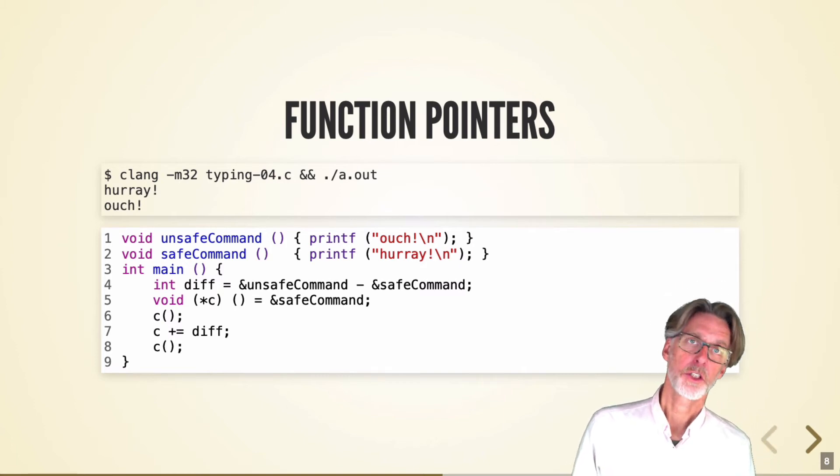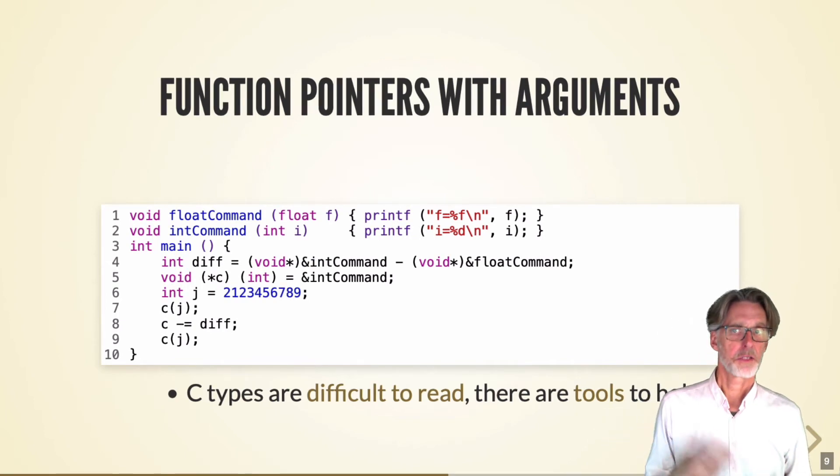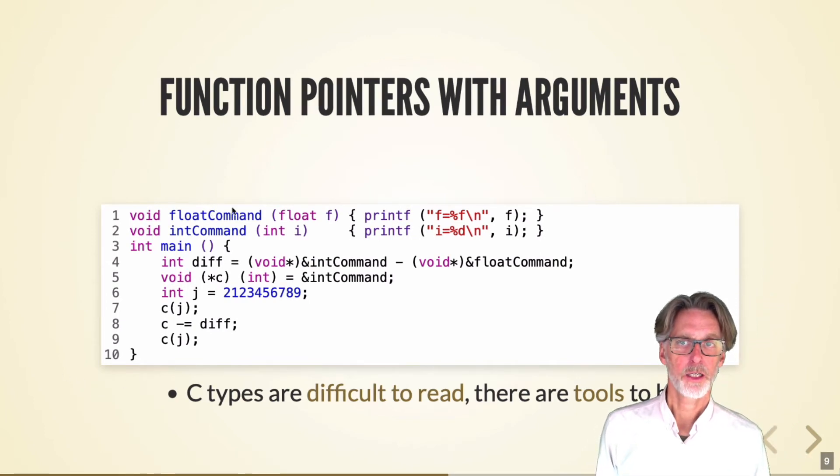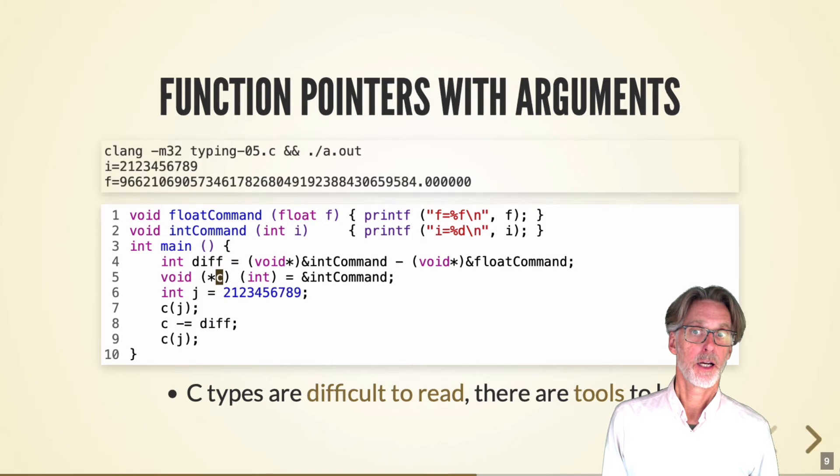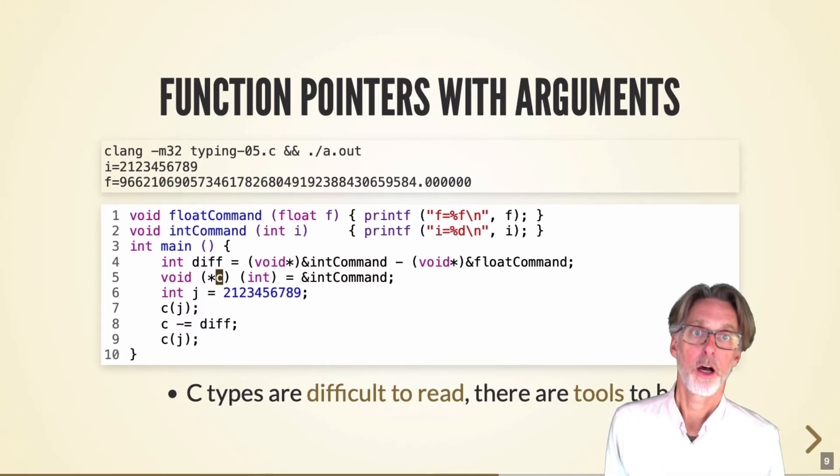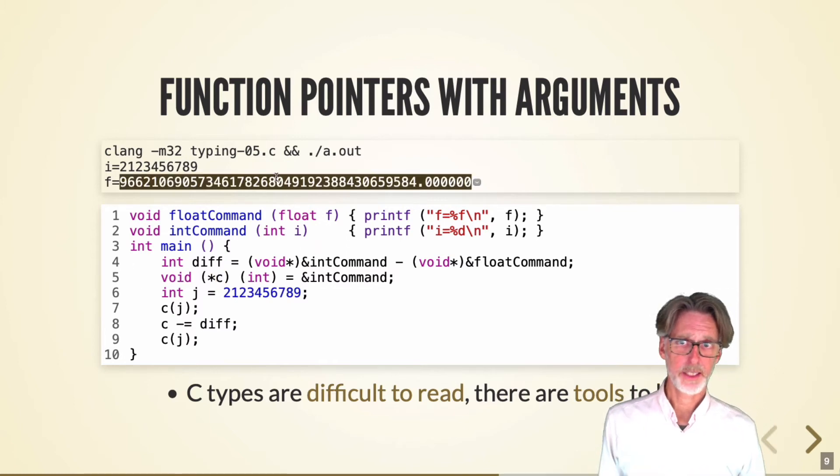This is worse if I have functions with parameters. So here, same game, but I have a floating point command and an integer command. Initially, I will store the integer command into a variable of the function type, which expects integers. I can then create an integer and invoke the function with the integer. And of course, I'll get the right result. But then if I move the pointer to point to the wrong thing, well, then I'm going to end up with a bad interpretation of that bit string. And so you can see here again, I will print out some crazy interpretation of the numbers.